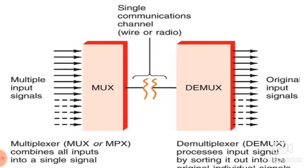Multiple input signals are given to the multiplexer. After multiplexing, all n number of inputs are sent through a single line. The demultiplexer receives all combined inputs on that single line and separates them back into the original signals. The MUX combines all inputs into a single signal, and the DEMUX sorts the received signal into different outputs.